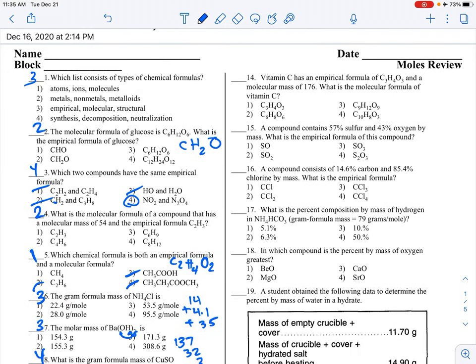Vitamin C has an empirical formula and a molecular mass. We're looking for molecular formulas again. Since I'm given the empirical, I need to find its GFM. 12 times 3 is 36, 4 times 1 is 4, 16 times 3 is 48. So 48 plus 4 plus 36 is 88 grams per mole, that's empirical. 176 is our molecular. If we divide that, it's a multiple of 2. I'm going to multiply all three subscripts by 2, so C6H8O6, choice 2.